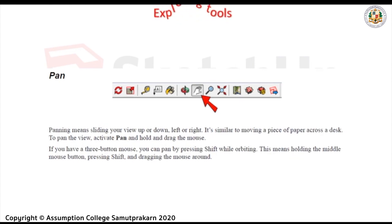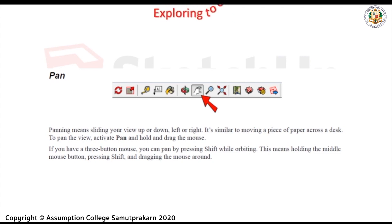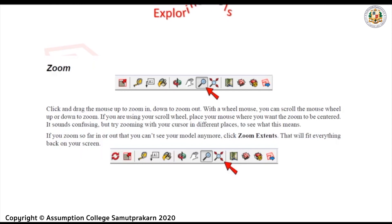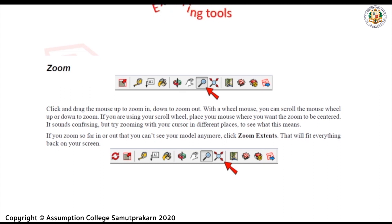Next is the Pan Tool. Panning means sliding your view up and down, left or right — it's similar to moving a piece of paper across a desk. To pan the view, activate Pan and hold and drag the mouse. If you have a 3-button mouse, you can pan by pressing Shift while orbiting — holding the middle mouse button, pressing Shift, and dragging the mouse around. Next, the Zoom Tool: click and drag the mouse up to zoom in, down to zoom out. With the scroll wheel mouse, you can scroll up or down to zoom.